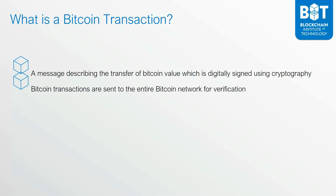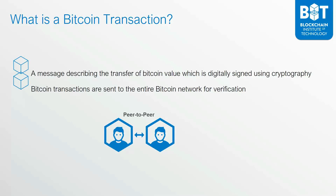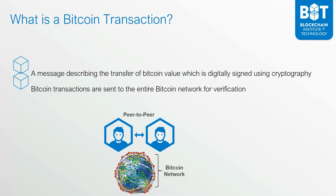Bitcoin transactions are then sent to the entire Bitcoin network for verification. As you may know, Bitcoin is transferred peer-to-peer — there's no need to have a third party such as a bank or a credit card. However, when someone sends Bitcoin to someone else, that transaction, which has been digitally signed using cryptography, needs to be verified by the entire Bitcoin network globally.